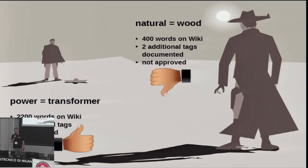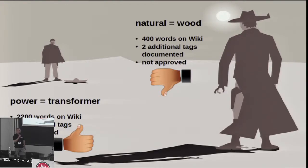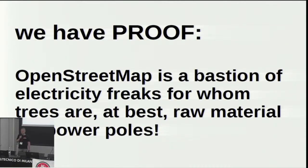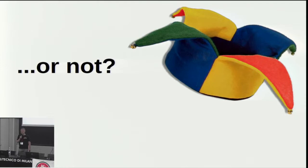So it seems obvious that power equals transformer has much more importance in OpenStreetMap than natural equals wood, right? This is the proof that OpenStreetMap is a bastion of electricity freaks for whom trees are only suitable to make power poles from. Or maybe not.